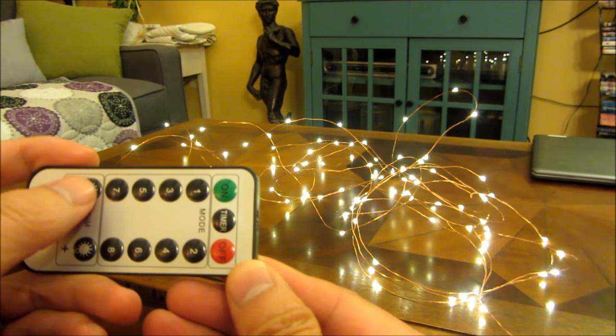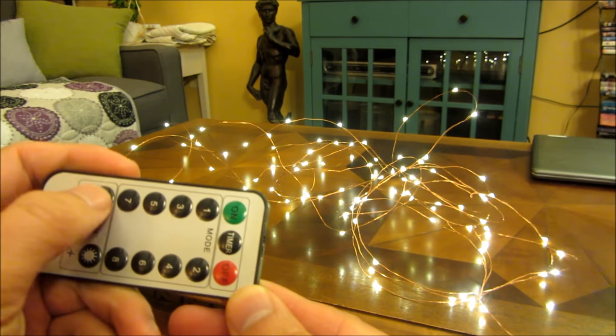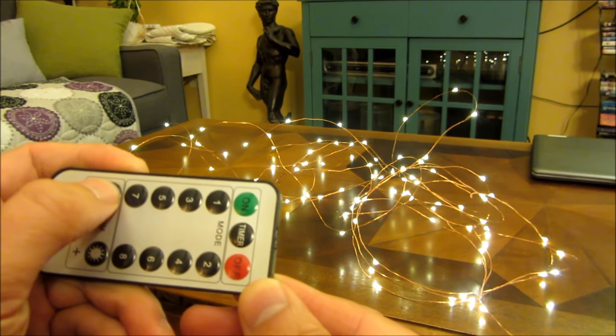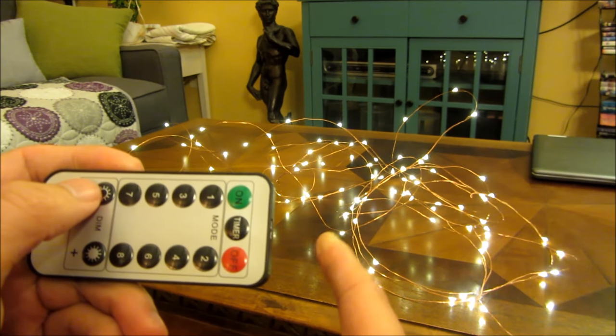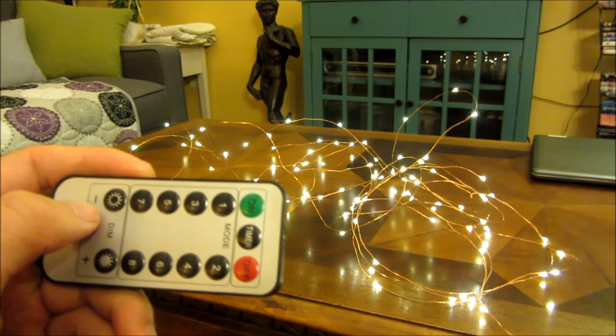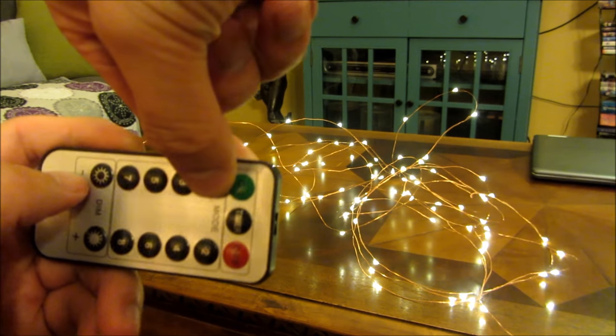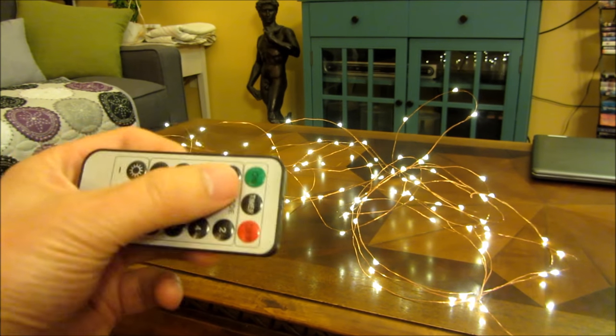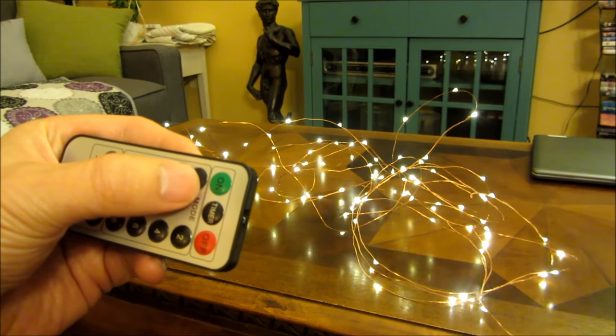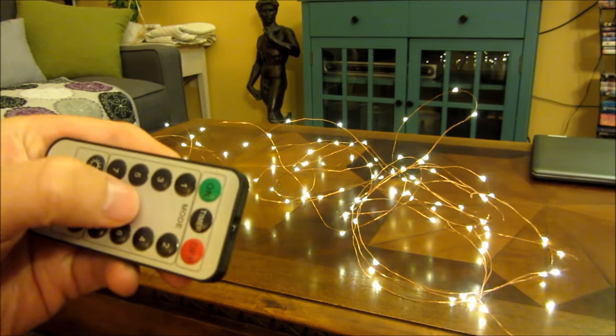So you'll notice I could dim it. And let me dim it here. And it's not really showing up as dimmed on the video itself. So let me just change modes. I'm going to change the mode here. And you can see now it's blinking rapidly. And that's mode 1.